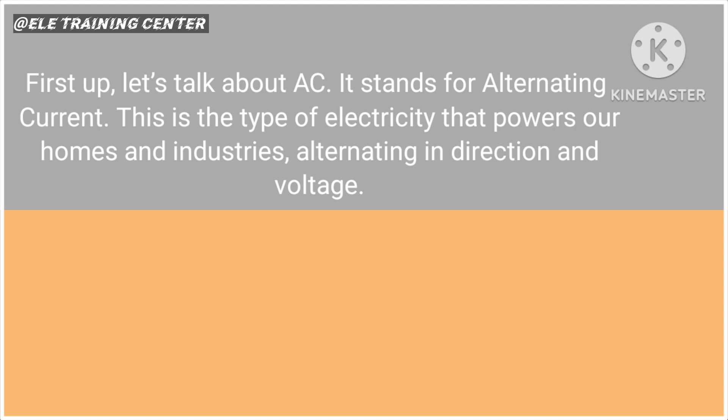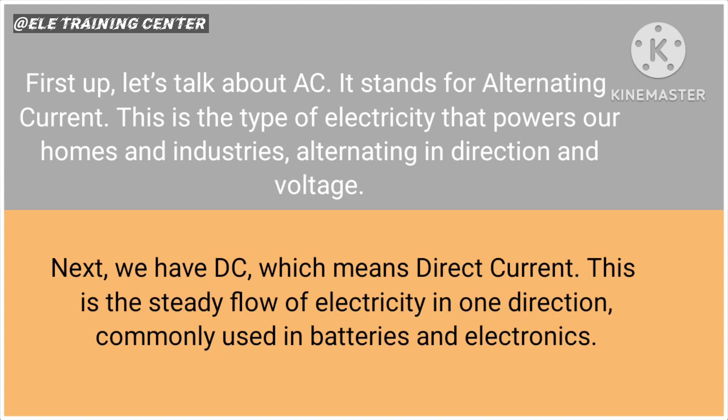Let's talk about AC. It stands for alternating current. This is the type of electricity that powers our homes and industries, alternating in direction and voltage. Next, we have DC, which means direct current. This is the steady flow of electricity in one direction, commonly used in batteries and electronics.